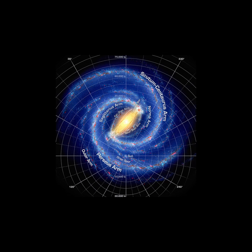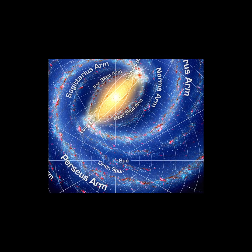These spiral arms contain both old and young stars. There are also two minor arms located between the major arms, called Norma and Sagittarius, which are rich with gas and regions of newly forming stars. Our Sun is near a small partial arm called the Orion Arm, located between the Sagittarius and Perseus arms.